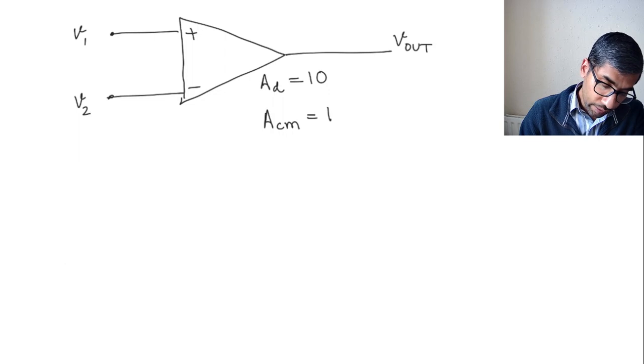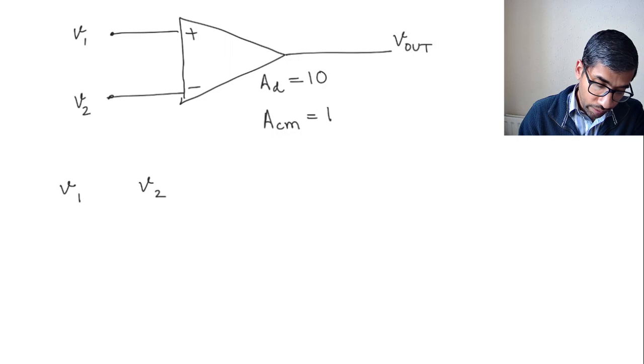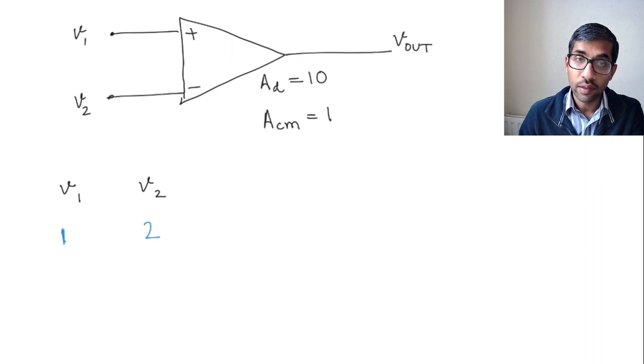And let's say what we do is, maybe let's make a table here. So let's say what's the values of V1, what's the values of V2. And let's start with values, let's give V1 as let's say 1 volt and let's put V2 as 2 volts. And what we want to calculate now is the output voltage.